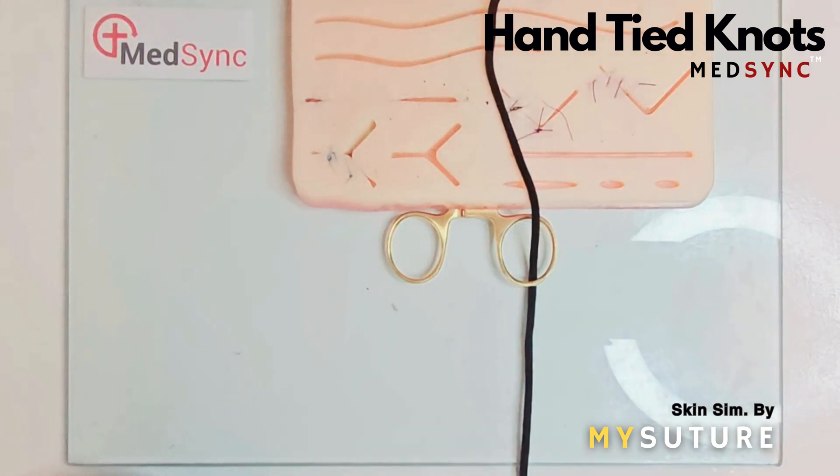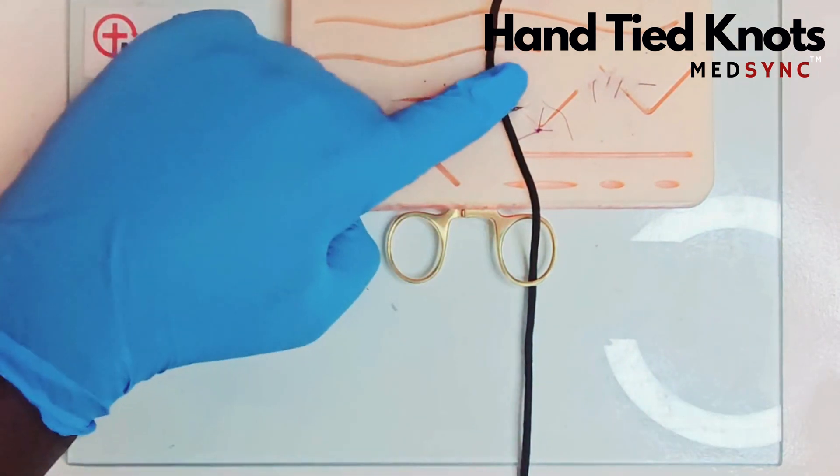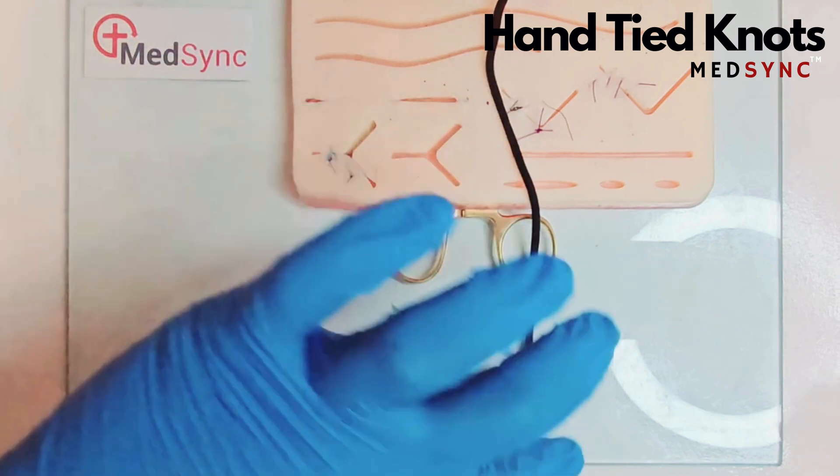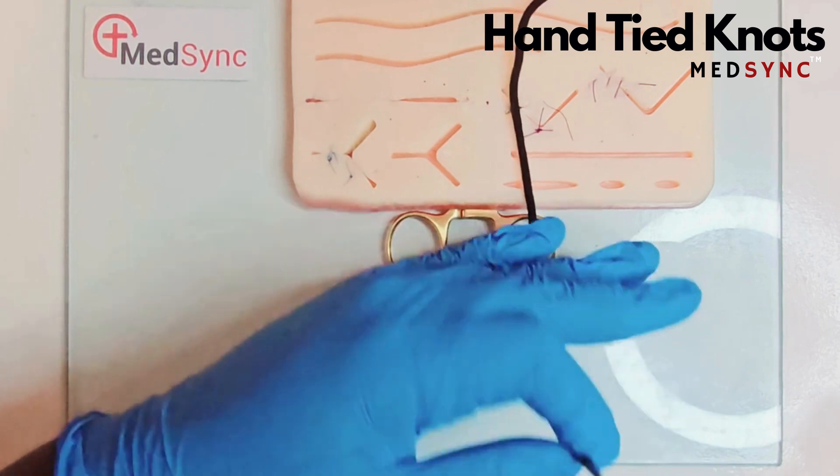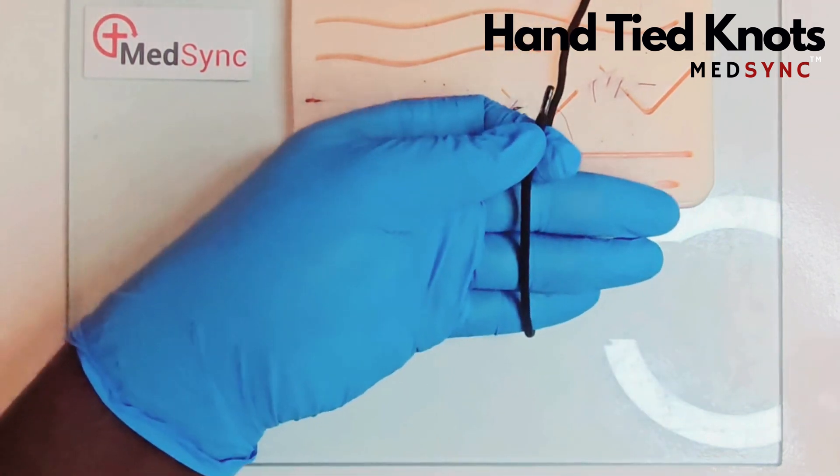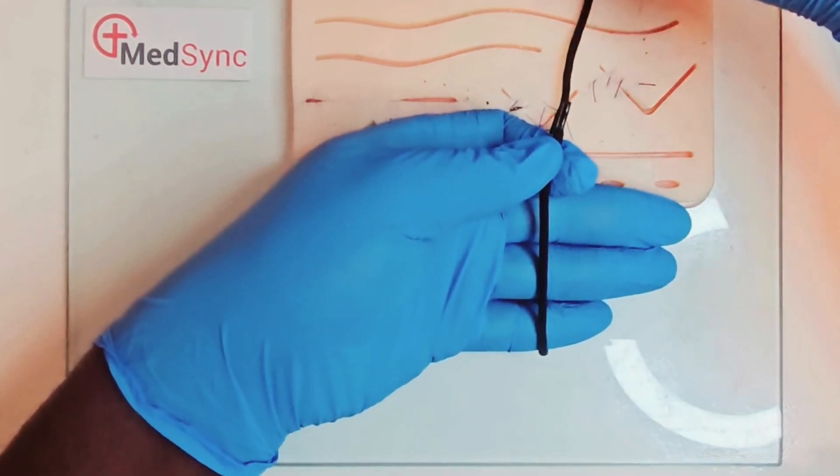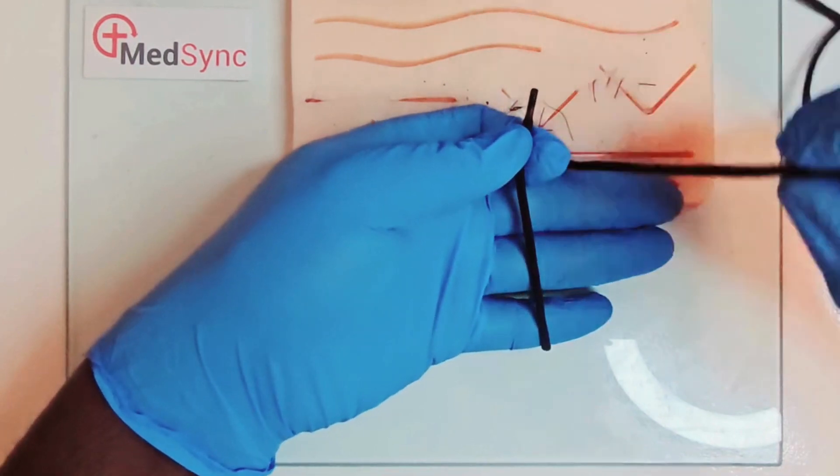You start with a short end toward you and a long end away. Use your left hand to pinch the short thread between index and thumb, supinate your hand, making the thread run up your palm. Using your right hand, run the long thread down your palm parallel to the short thread.